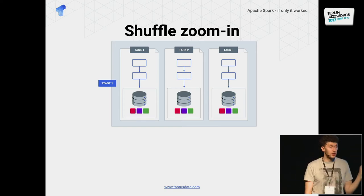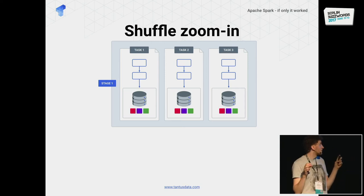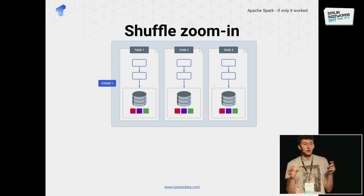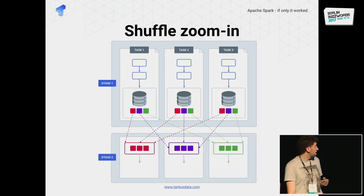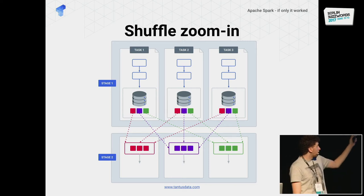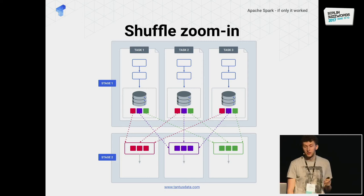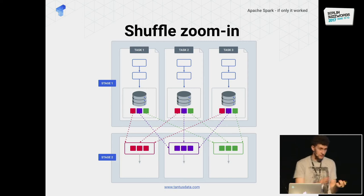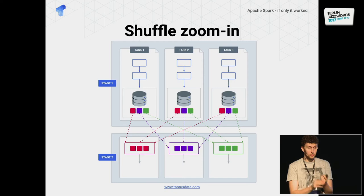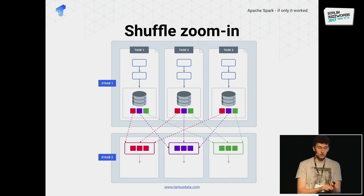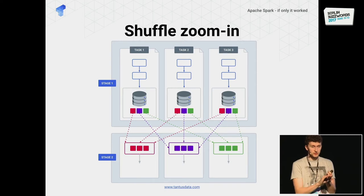At the end of stage one, we have the results of tasks written to local disks so they can be pulled together. All the red buckets responsible for the same group of keys can be pulled together, and stage two can start processing from there. As you can see, there is quite a lot of IO — writing to disk, reading from it, and sending data over the network. It's expensive. But your application might actually need multiple shuffles and you simply cannot avoid it.